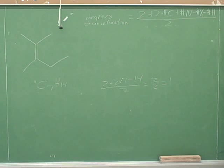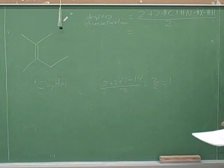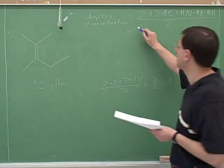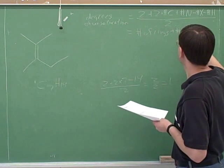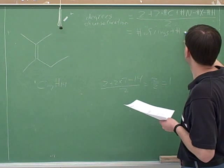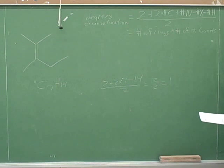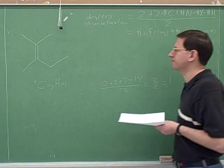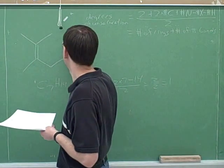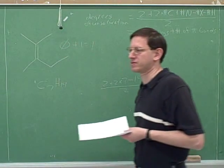And what would that tell us? That would tell us, I don't know. Remember that the degrees of unsaturation tells you the number of rings plus the number of pi bonds. This is the best way to think of it. Number of rings plus the number of pi bonds. That tells us the number of rings plus the number of pi bonds should be 1. Let's confirm that here. How many rings does this molecule have? Zero. And how many pi bonds? One.